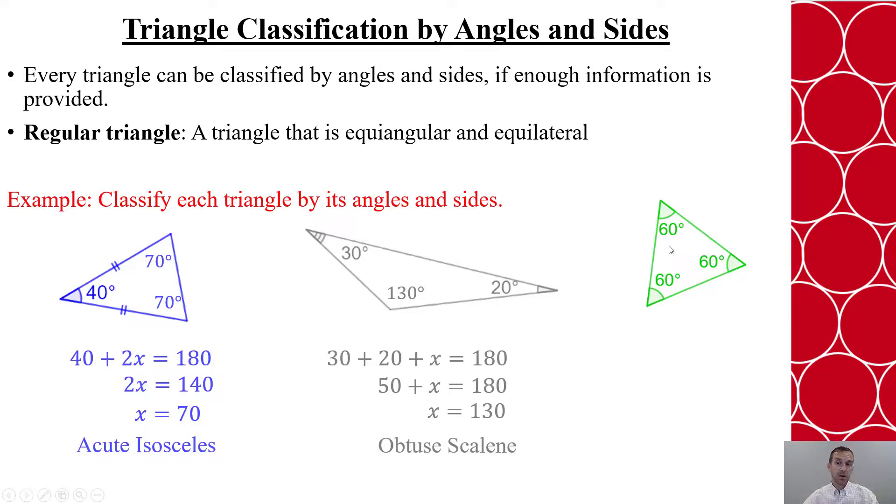And in my third example here, all three sides are congruent. That means all three angles are congruent, which means all three sides have to be congruent as well. This makes it a regular triangle.